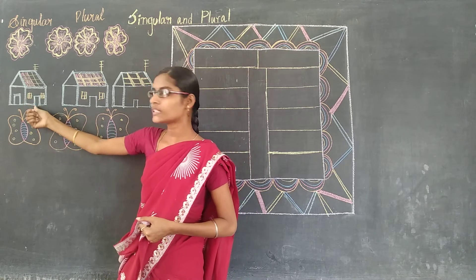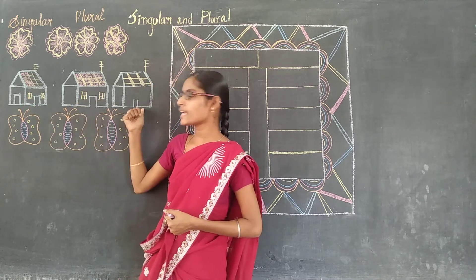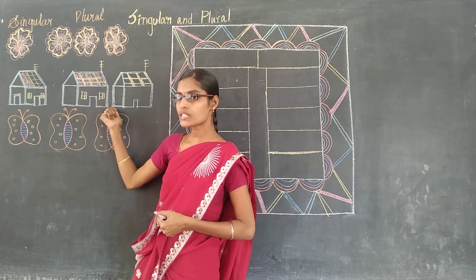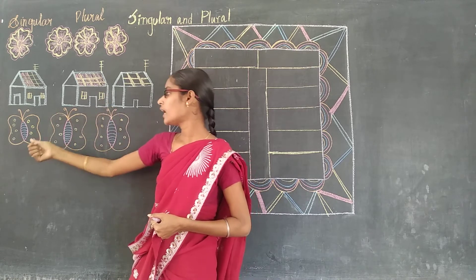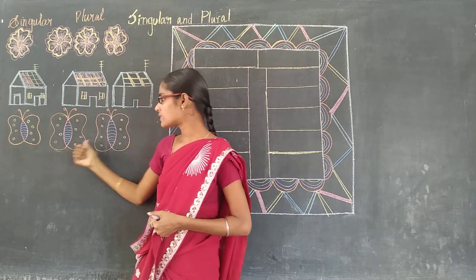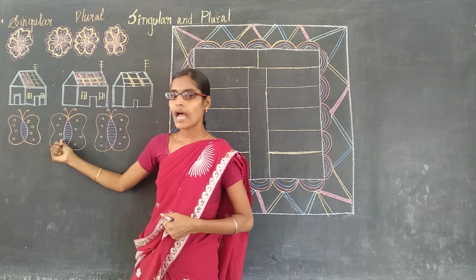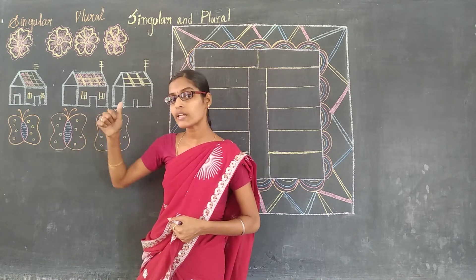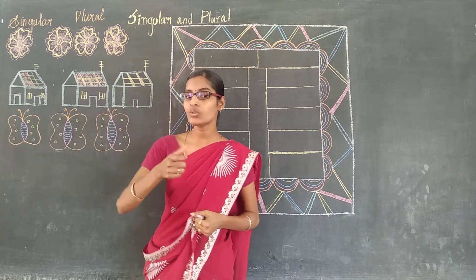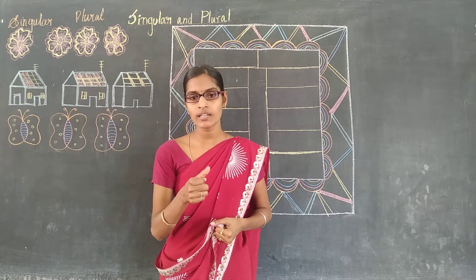Look at this. This is house — houses. House, houses. Butterfly — butterflies. One butterfly here, and two butterflies here. Can you notice the difference in pronunciation?